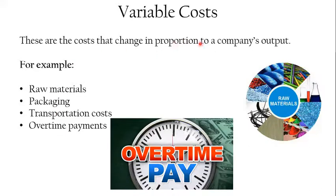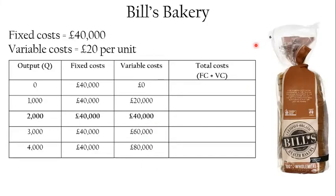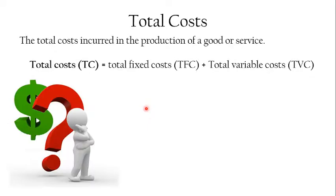Again, just saying 'variable costs are costs that change' doesn't mean anything — variable costs are costs that change proportionally with an organisation's output. In this table, variable costs are £20 per unit. You can see that variable costs increase the more output is produced, so making 1,000 cakes results in £20,000 in variable costs.